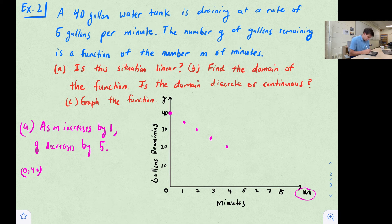Seven minutes, we have 5 gallons left. And then finally, after eight minutes, our tank is empty. Okay, so now, right now it looks like a discrete domain, but let's ask ourselves, is the tank only draining on the minute?